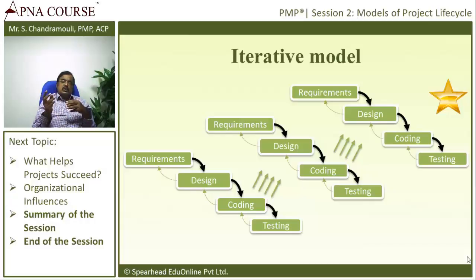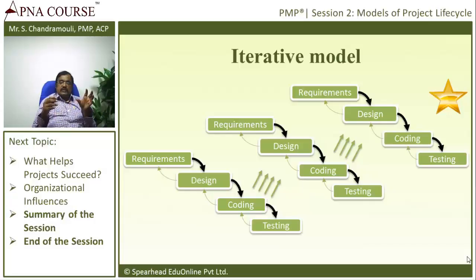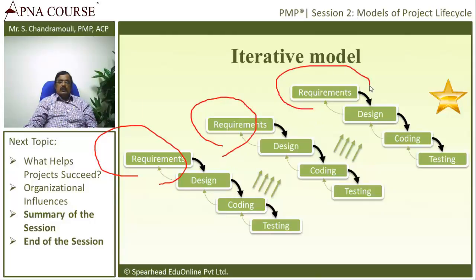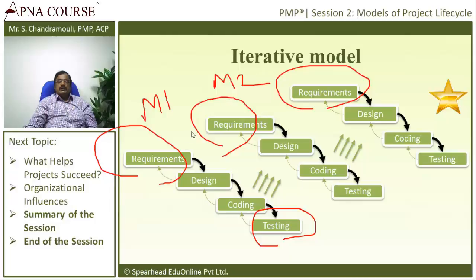When we go from module one to module two, we may also be refining module one — that's a different thing. So from module one to module two, we repeat the requirements. You can see module one requirements, module two requirements, module three requirements — each module moves from requirement to design to testing in an iterative way. That is why this is called the Iterative Model.